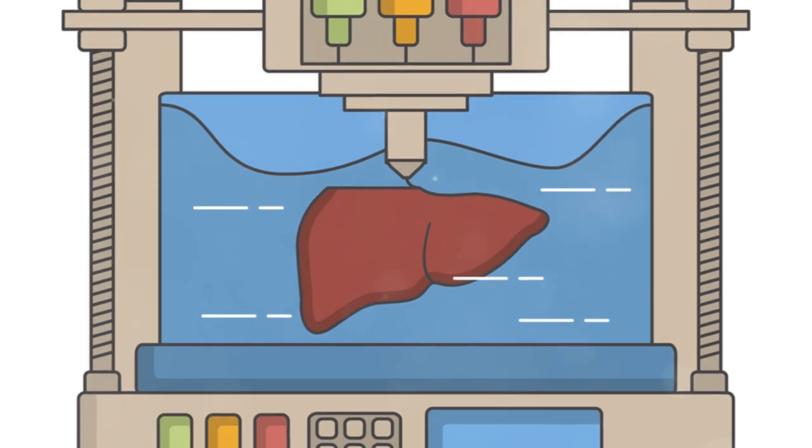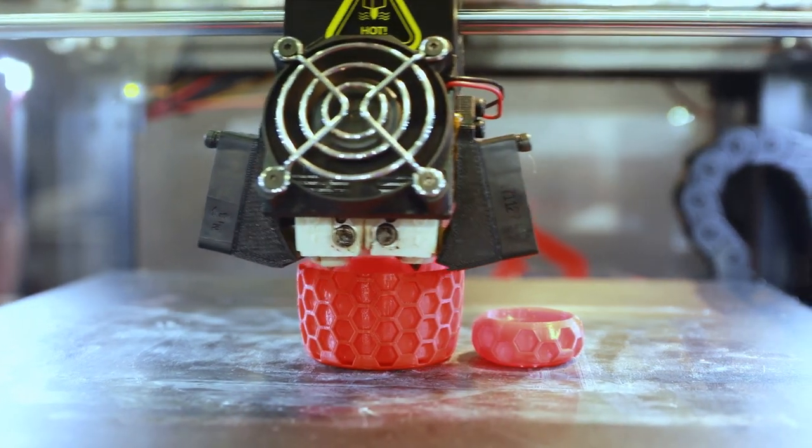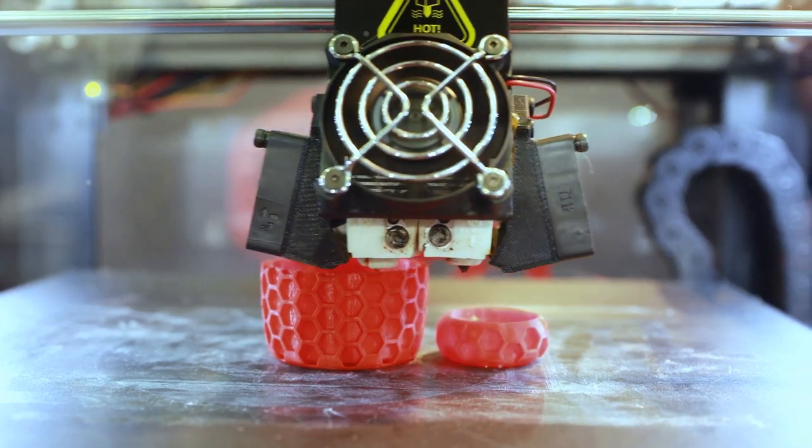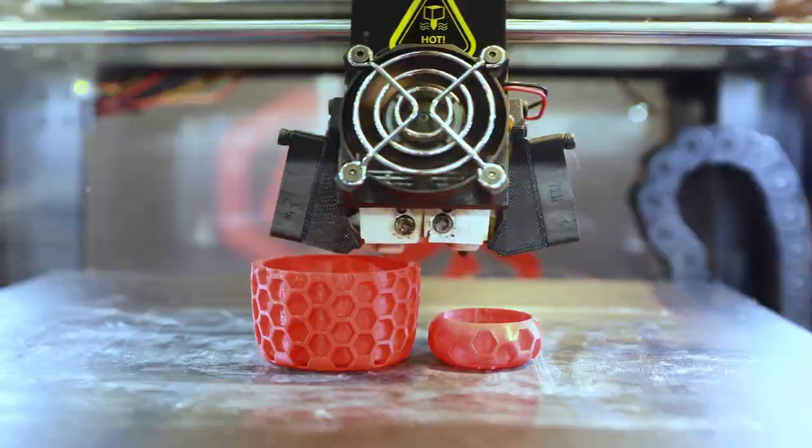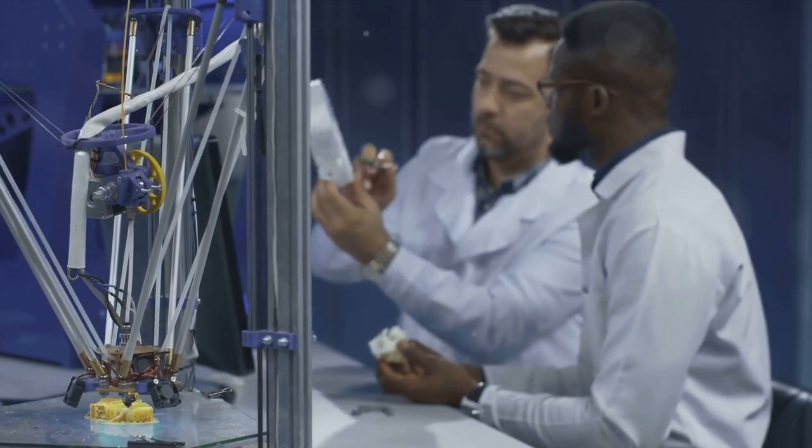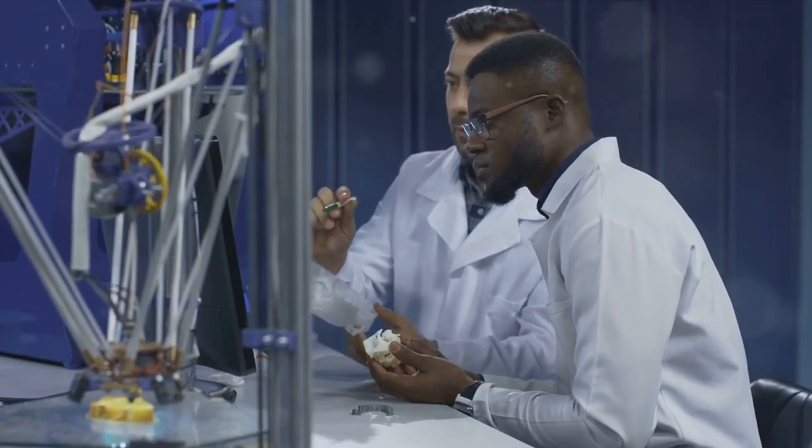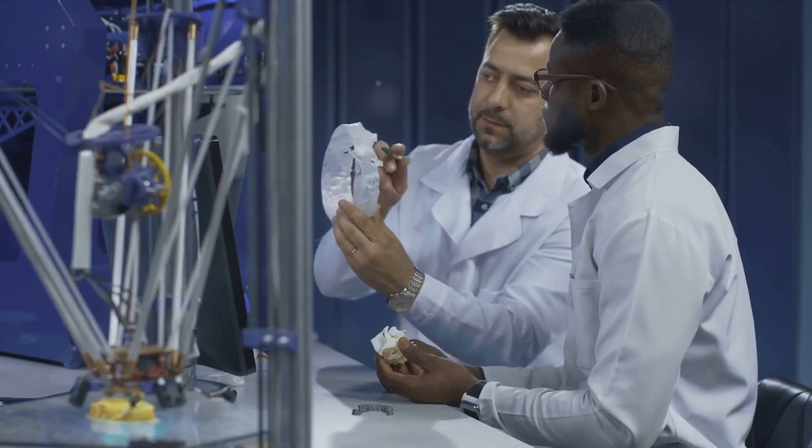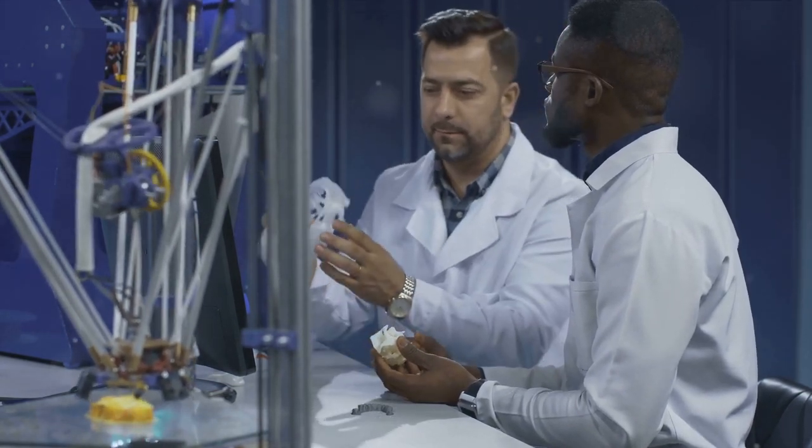3D printing, or additive manufacturing, is a process that creates a physical object from a digital model. In the realm of biomedical engineering, it's being used to create anatomical structures that are incredibly compatible with the human body. Picture it like this: a digital blueprint is created either from a CT scan or from scratch, and a specialized printer lays down layer upon layer of a specific material until the final structure is formed.